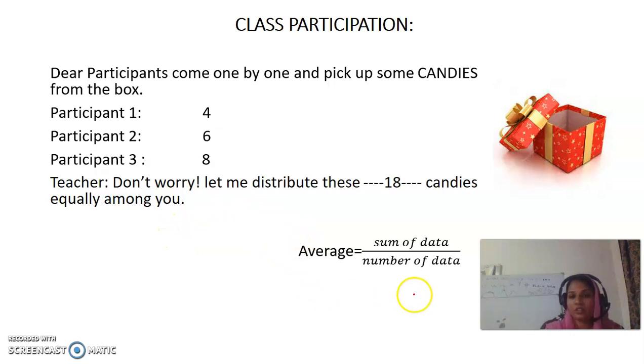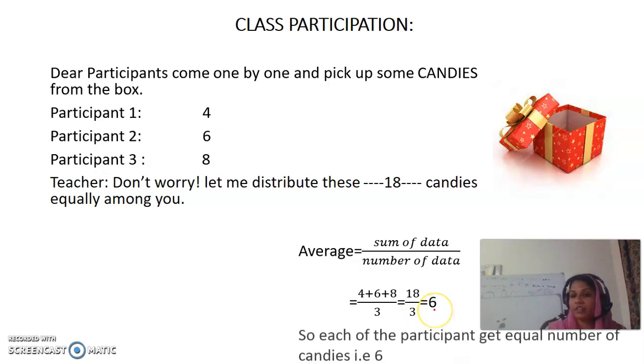Again this formula is going to help us a lot. I will sum up all of these candies, 4 plus 6 plus 8 and I will equally divide it among 3 of you. In total I got 18 candies, so when I will distribute it among 3 of you, each boy is going to get 6 candies.